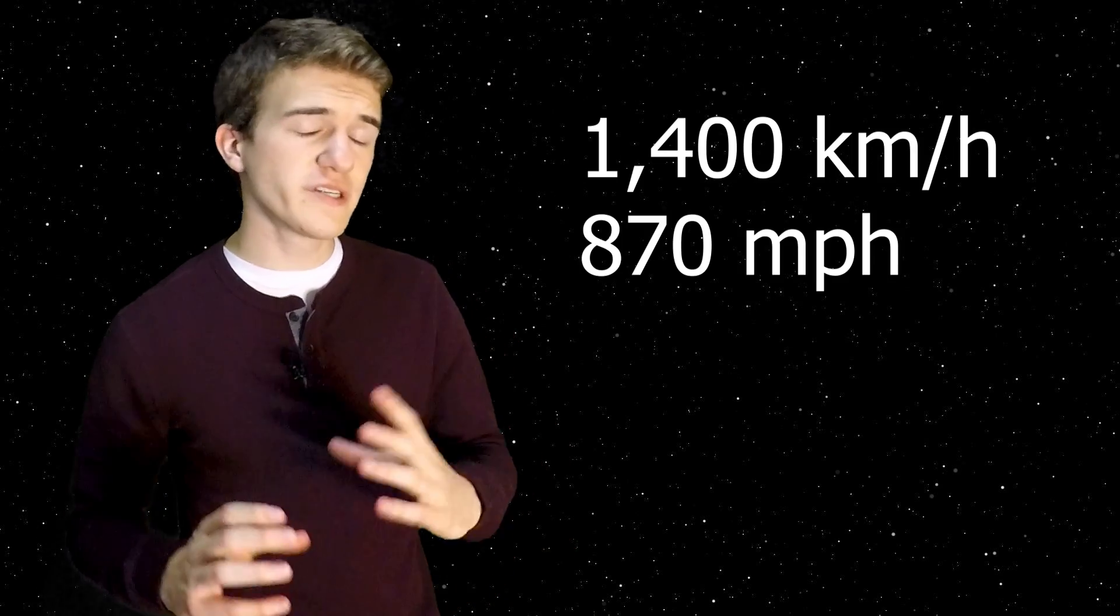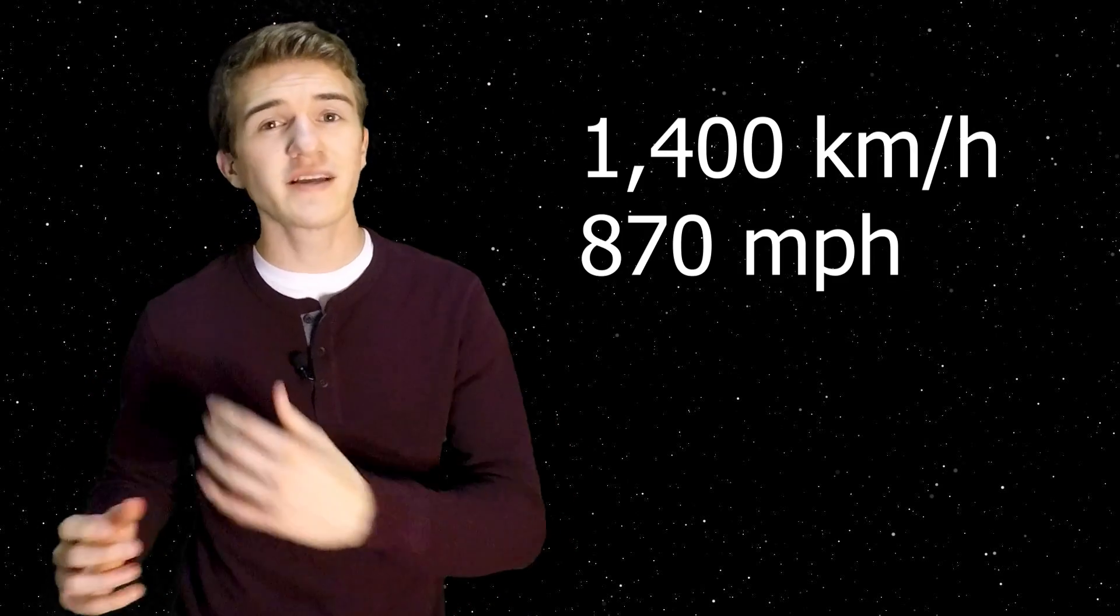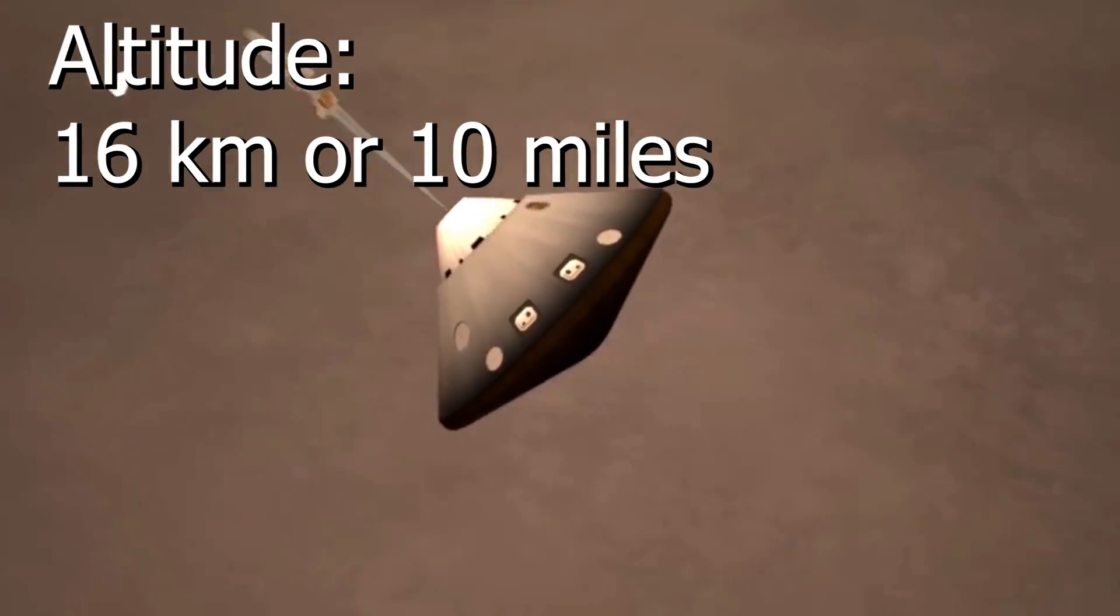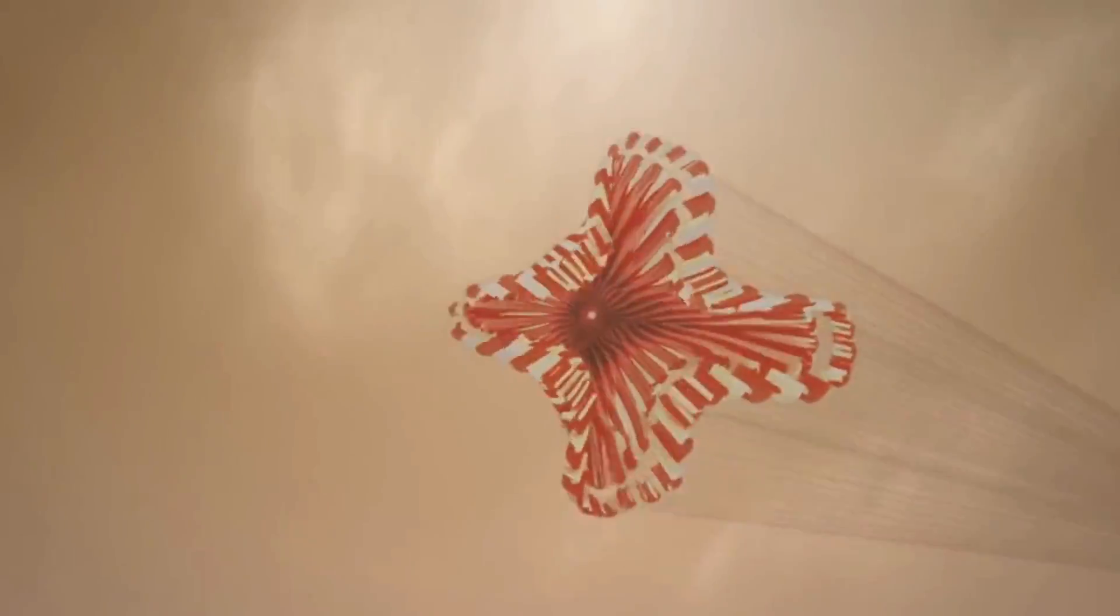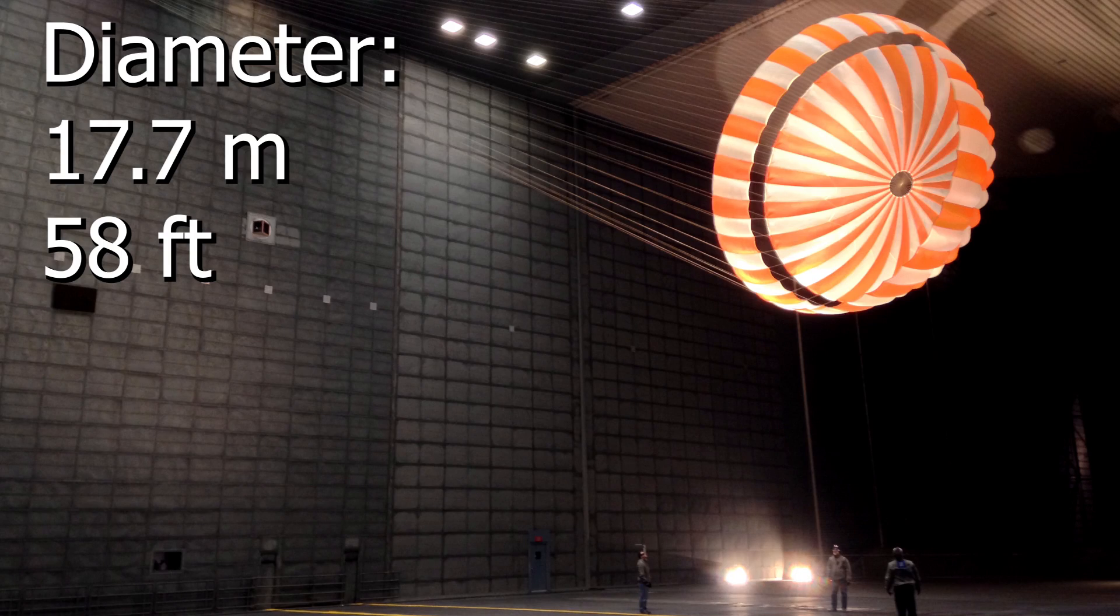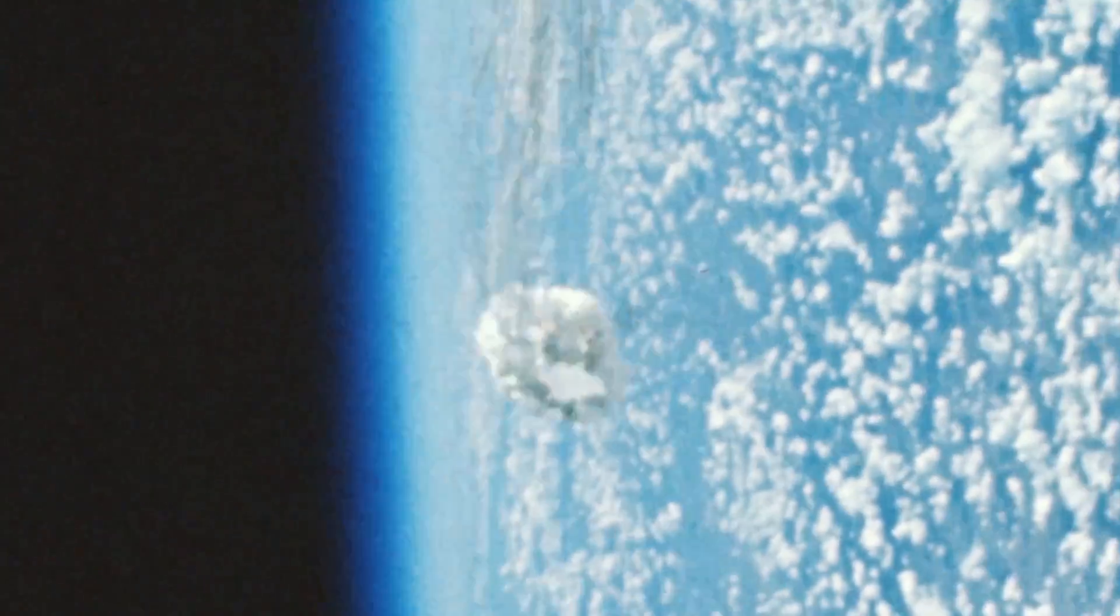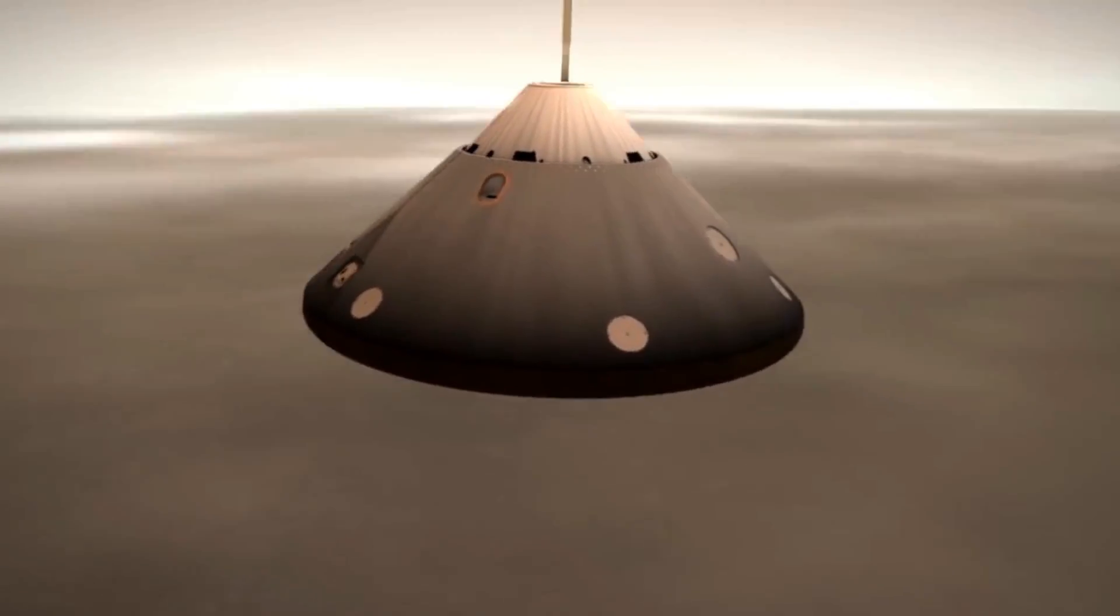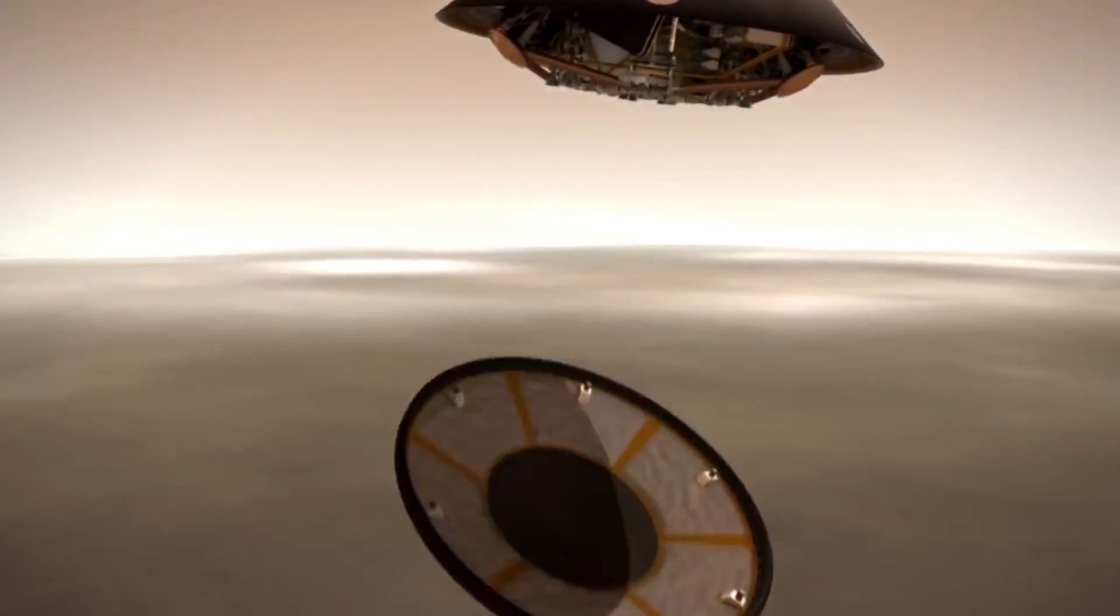Once the spacecraft reaches around 1,400 kilometers per hour, about 16 kilometers above the surface, the supersonic parachute deploys from InSight. This parachute is 17.7 meters in diameter and was tested on Earth at very high altitudes to resemble the Martian atmosphere. 15 seconds after the parachute deploys, the heat shield is dropped because it's no longer needed for landing.